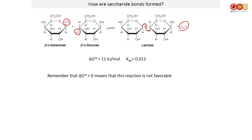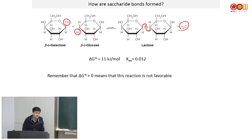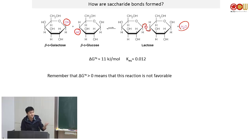If you look at this chemical reaction, the standard change in Gibbs free energy is about +10 kilojoules per mole. If you convert that to an equilibrium constant, the Keq is 0.01 — so it's not a favorable reaction. The direction that is thermodynamically preferred is actually the degradation pathway.